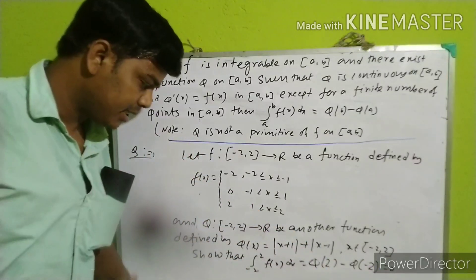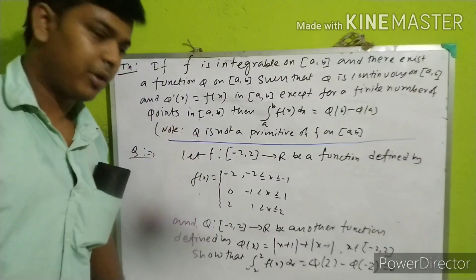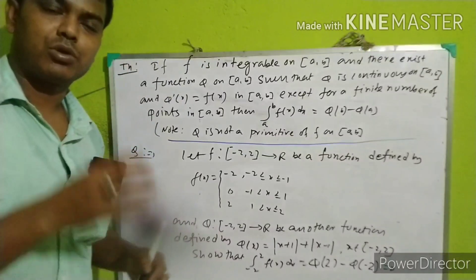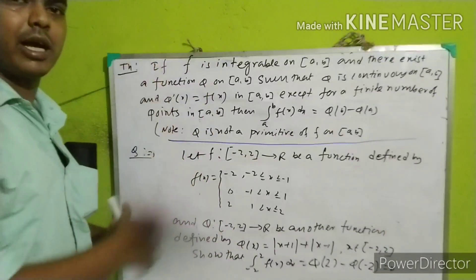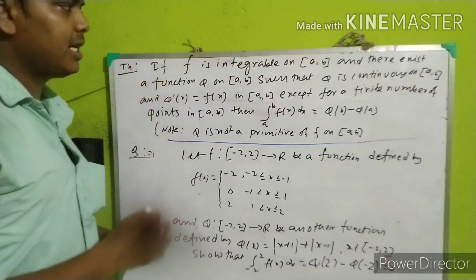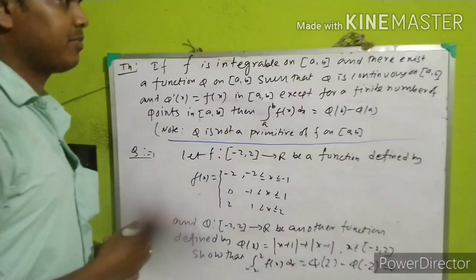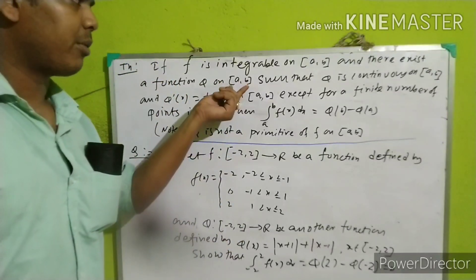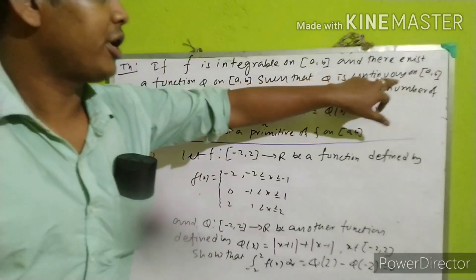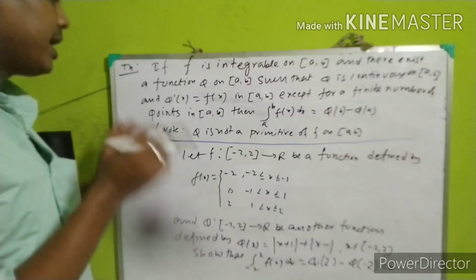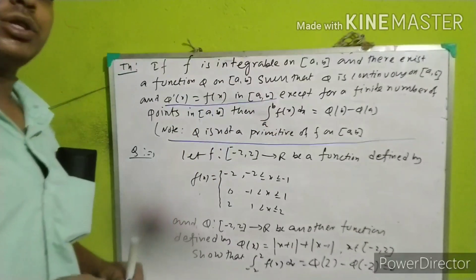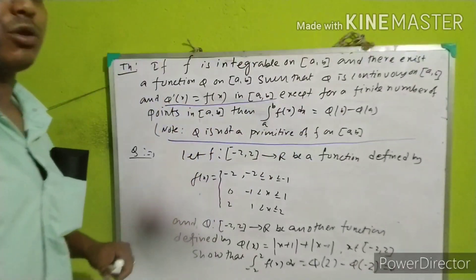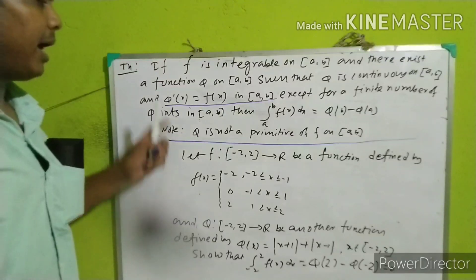Phi of x is a function on the closed interval [1, 2]. If you see phi on closed interval [1, 2], phi is continuous on closed interval [1, 2]. Phi of x equals x in closed interval [1, 2], except for a finite number of points in closed interval [1, 2]. Phi dash x equals f of x.